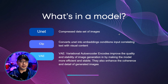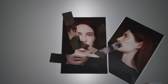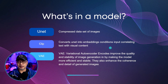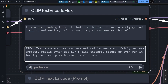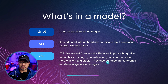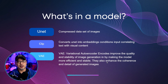First, let's talk about what's in a model. Generally speaking, the model is made up of three parts: the unit, clip, and VAE. The unit is basically the dataset of images compressed into a smaller file size. The clip converts the unit into embeddings, conditions the input, and translates the text — which is your prompt — into visual content. And then there's the variational autoencoder, known as a VAE, which makes the model more efficient and stable and can enhance things like saturation, sharpness, and detail.